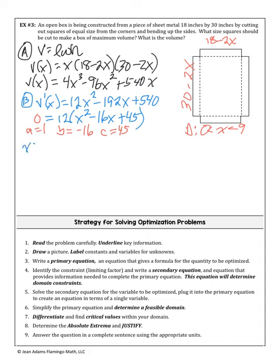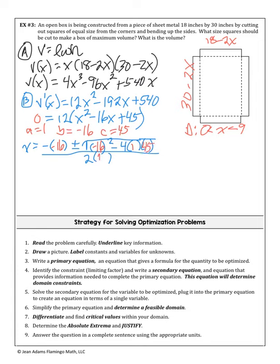This is not a factorable quadratic, so use the quadratic formula with a = 1, b = −16, c = 45. The quadratic formula gives x = (16 ± √(256 − 180))/2 = (16 ± √76)/2, which simplifies to x = 8 ± √19.